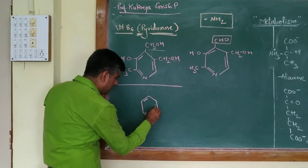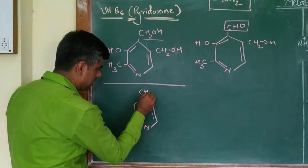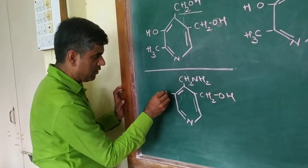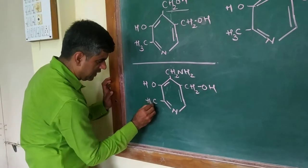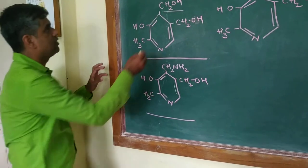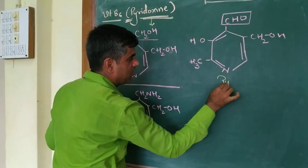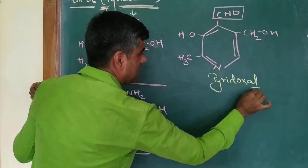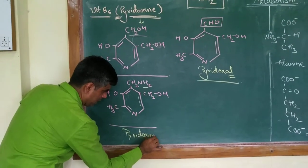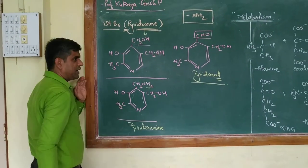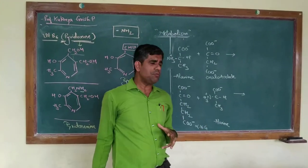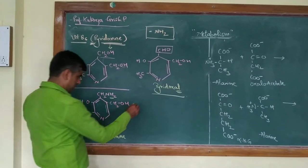If you look at the pyridoxamine form, pyridoxamine will look something like this. So we have pyridoxine — the form having an aldehyde group — and pyridoxamine, the form having an amine group. Before a vitamin acts as a coenzyme, it is converted into a coenzyme form. The coenzyme form of pyridoxine is pyridoxal phosphate.